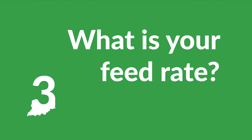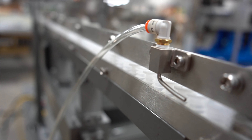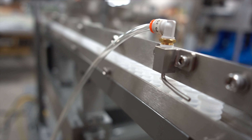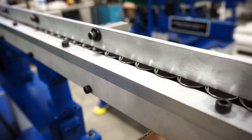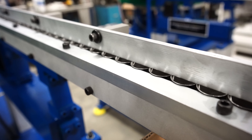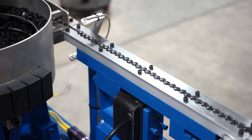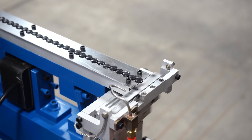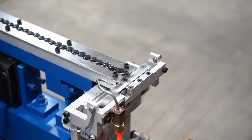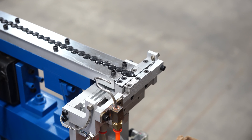Question 3: What is your feed rate? The feed rate is the rate of part output your assembly machine requires to run effectively. When designing your feeder, our goal is to produce a rate to exceed your rate requirements as a buffer. If you determine your system needs to process 100 parts per minute, we need to design a feeder that feeds 120 parts per minute to overcome any potential interruptions and allow your system to run at its highest potential.